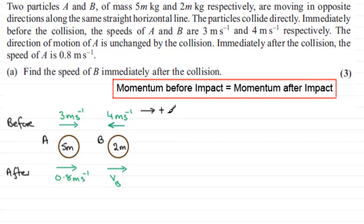Now if we do that, looking at the total momentum before impact, we look at the momentum of A, which is going to be the mass, which is 5m, and we're multiplying it by the velocity of A, the initial velocity. So that's going to be 3 meters per second, and because it's in the positive sense, that's going to be plus 3. So mass times velocity.